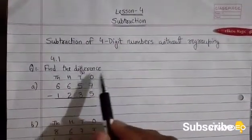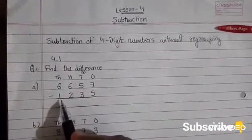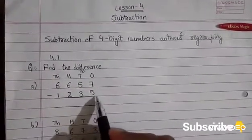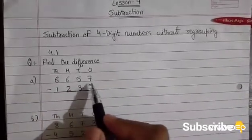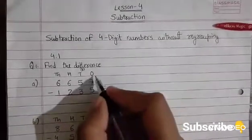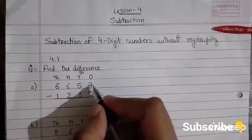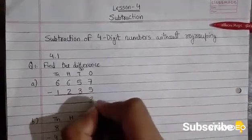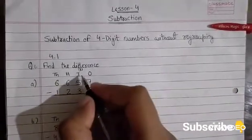Question number 1. Find the difference. Let us subtract 1235 from 6657. First, we will subtract the number given at the 1's place, that is 7 - 5 equals 2.